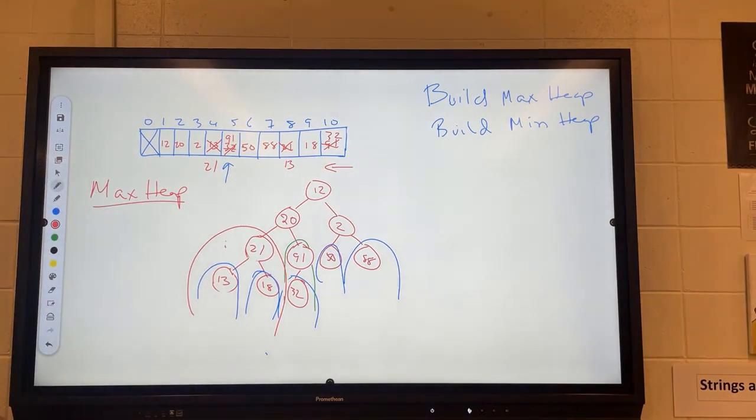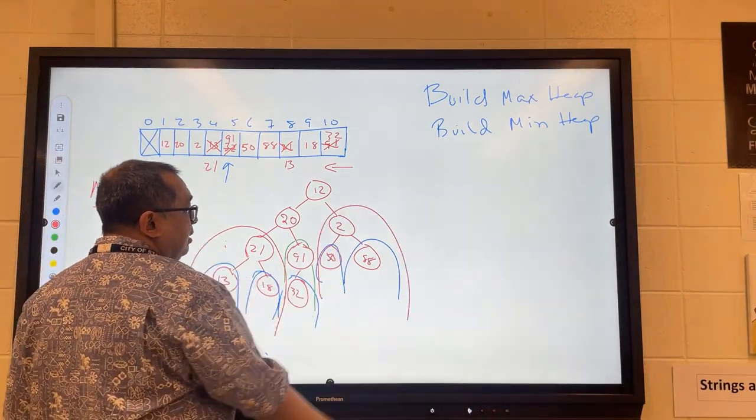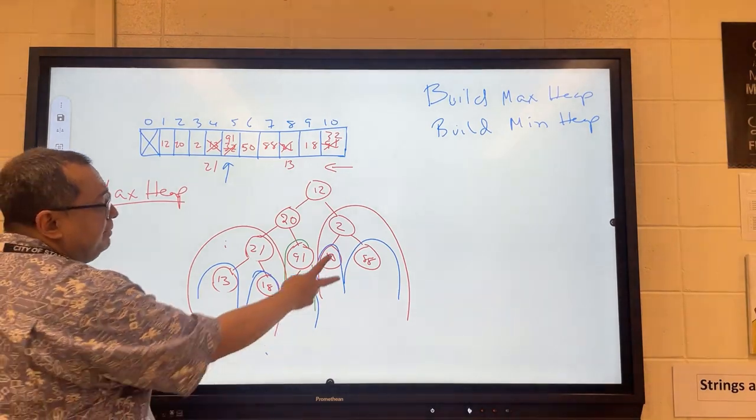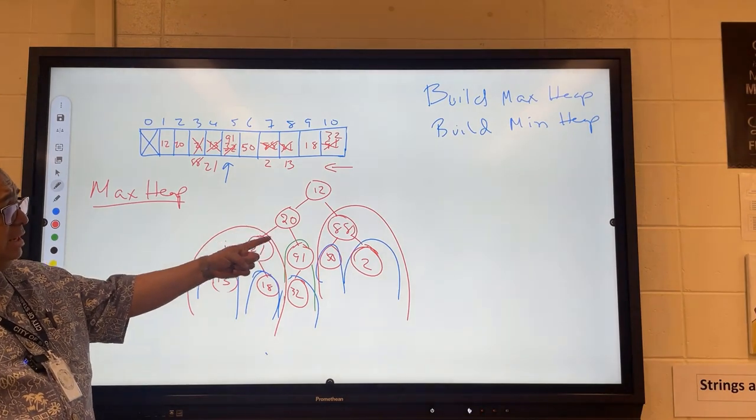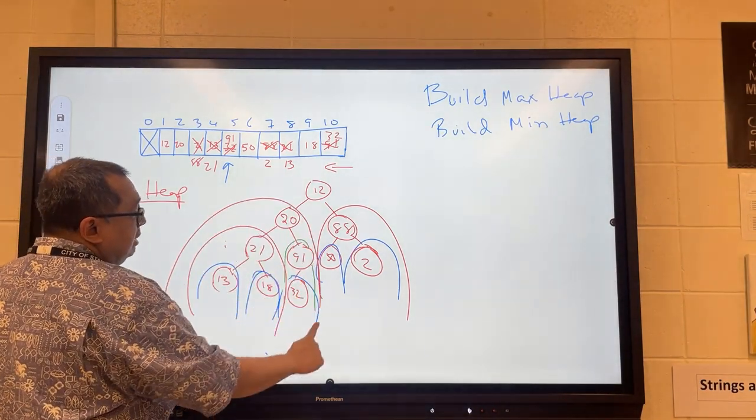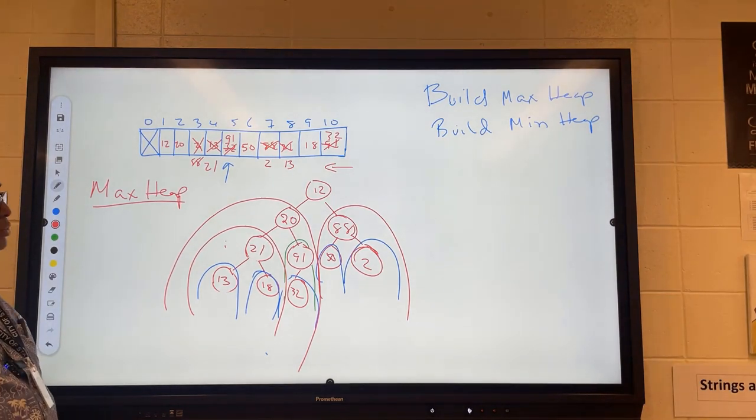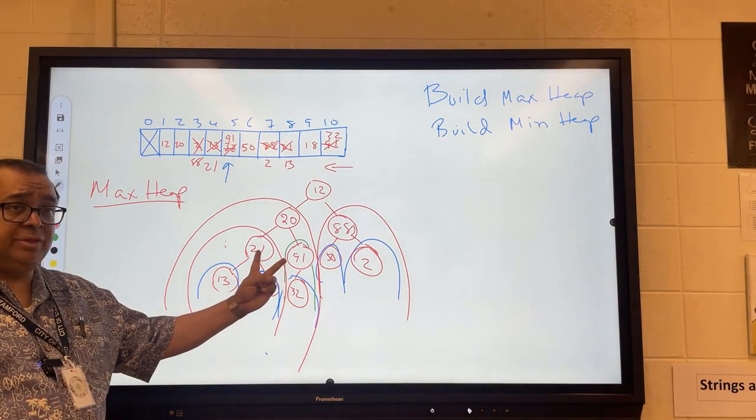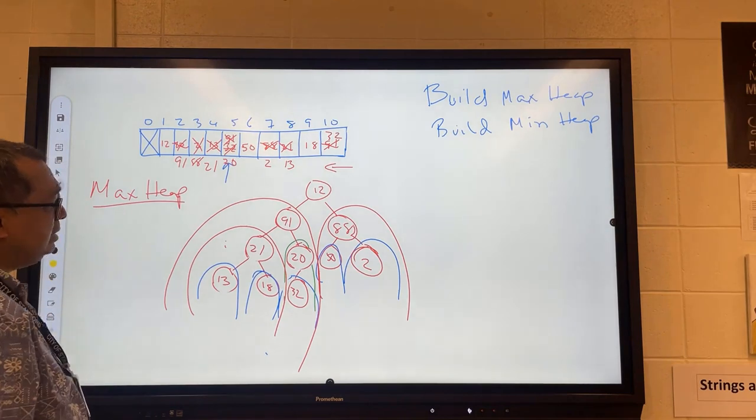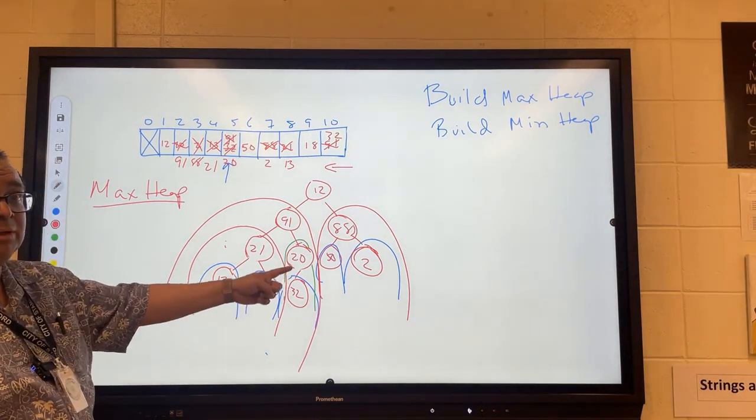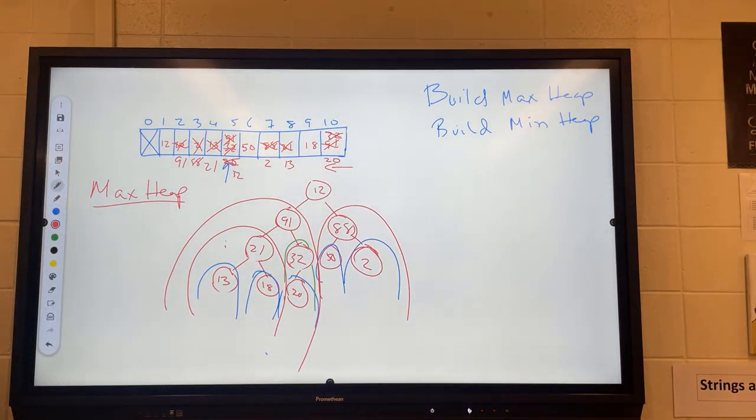And now we have to process the 2 next. And I want to see if this is a subheap now. And it is not. So we're going to swap the 88 and the 2. And now we're going to process the 20. And we want to make sure this whole thing is a subheap. Is it a subheap right now? It is not. So we need to swap it. Can I arbitrarily swap it with either of these? No. Which one should I swap it with the 91? And now I'm not done still. I need to do another bubble here and swap the 32 and the 20. And now I'm done processing.